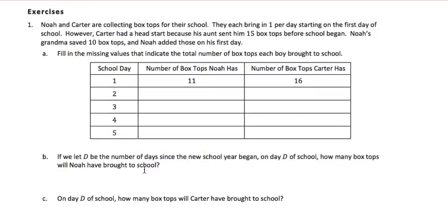Now let's practice with the exercises. Noah and Carter are collecting box tops for their school. They each bring in one per day starting on the first day of school. However, Carter had a head start because his aunt sent him 15 box tops before school began. Noah's grandma saved 10 box tops and Noah added those on his first day. So Noah started with 11 — that was the 10 his grandma gave him plus the one he brought on the first day. Then on day two he would have 12, day three 13, day four 14, and day five 15.